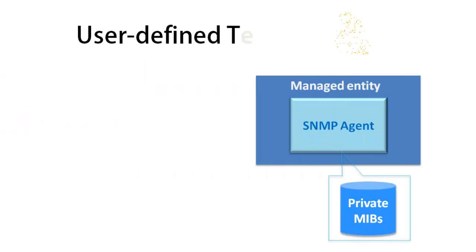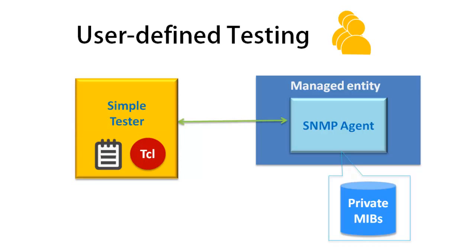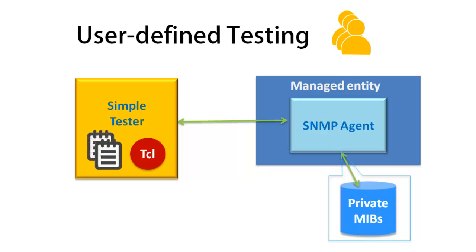SimpleTester is highly customizable. It includes a test suite builder and an embedded TCL interpreter to help you create your own automated semantic test scripts to test your private MIBs. There are over 130 TCL extensions and TCL procedures that SimpleSoft has added to the TCL interpreter that send SNMP requests and receive responses and traps. The source code for semantic test suites is also included and can be used as templates to create your own scripts.